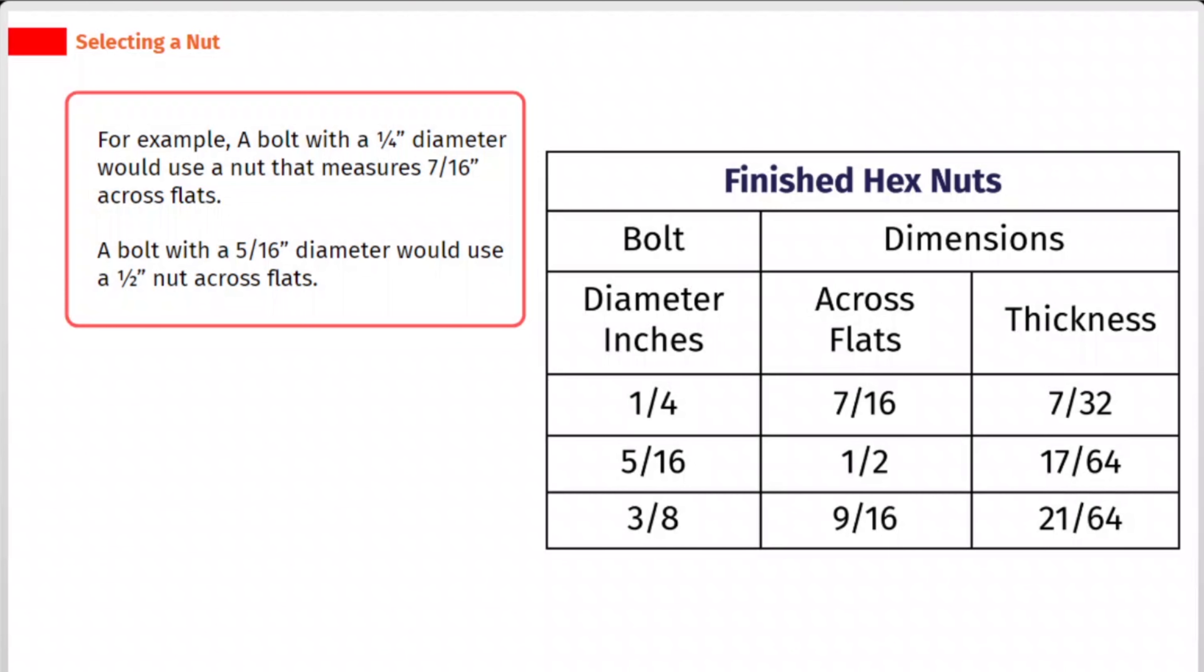For example, a bolt with a 1 by 4 inches diameter would use a nut that measures 7 by 16 inches across flats. A bolt with a 5 by 16 inches diameter would use a 1 by 2 inches nut across flats.